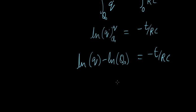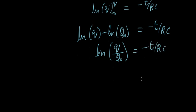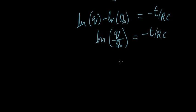Log of something minus log of the other thing can be directly written as log of that over the other thing. So minus T over RC. And let's now take the anti-logs on both sides. So we're left with Q over Q0 equals E power minus T over RC.